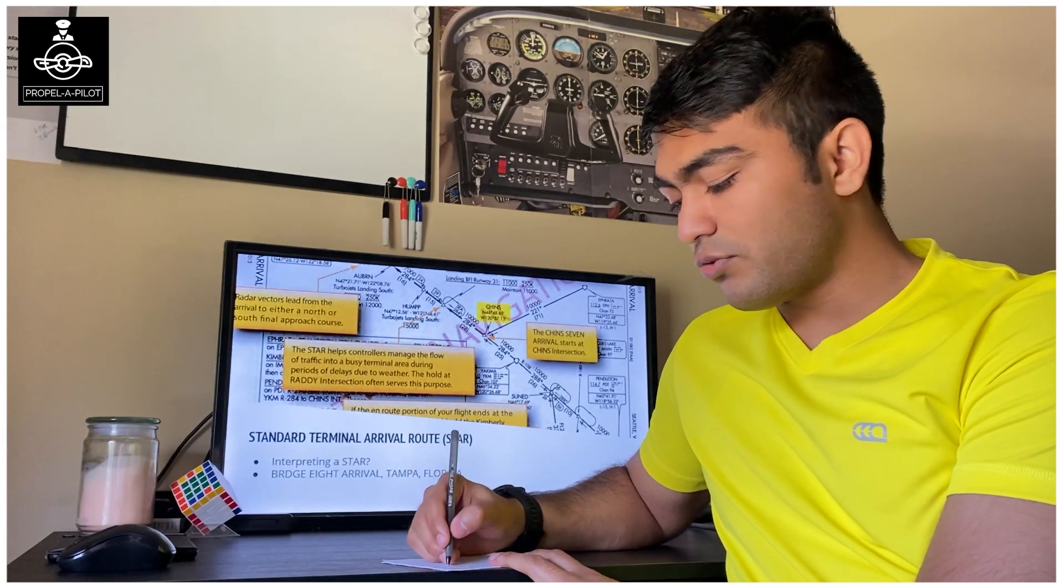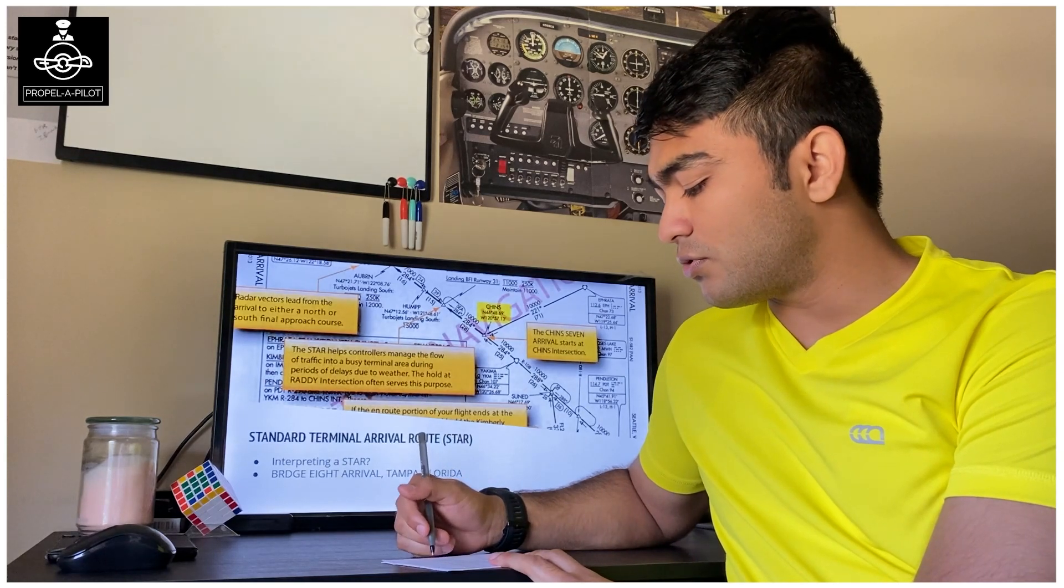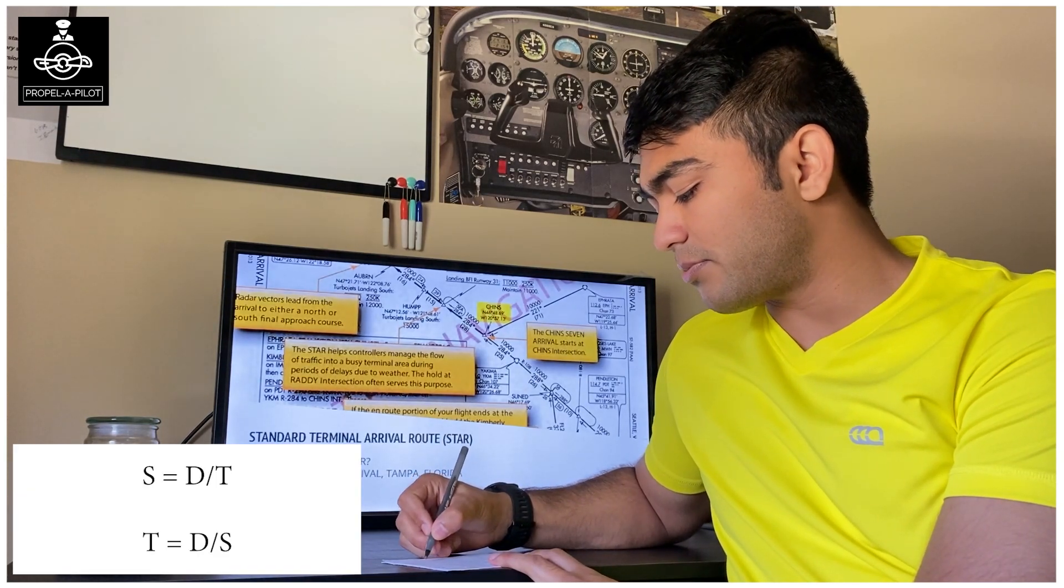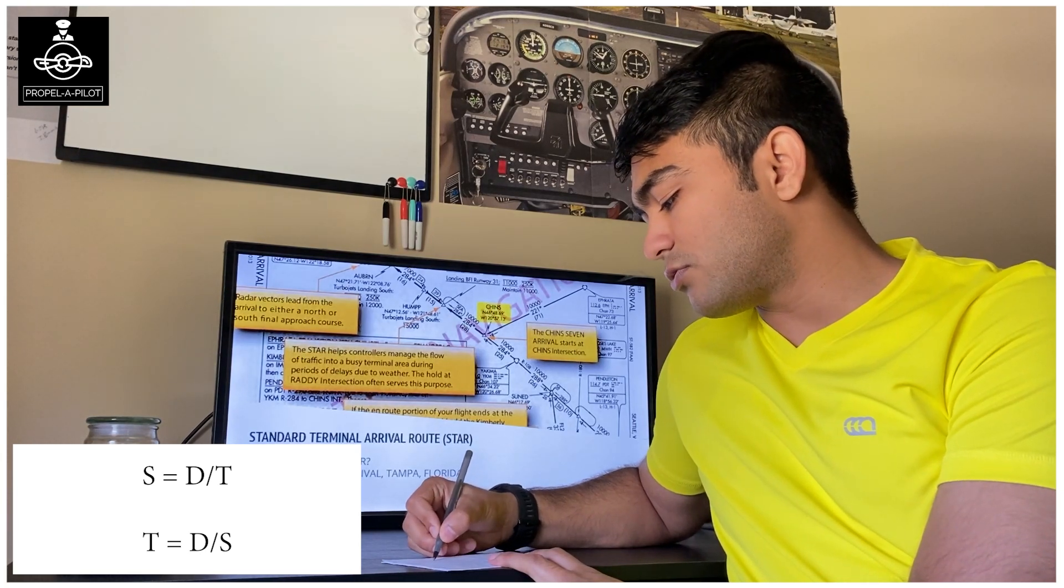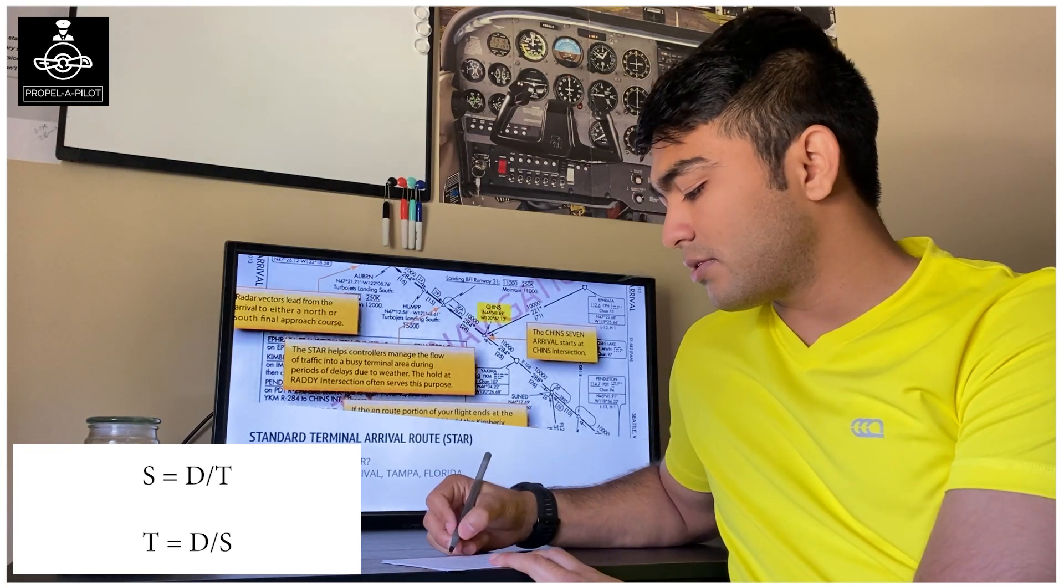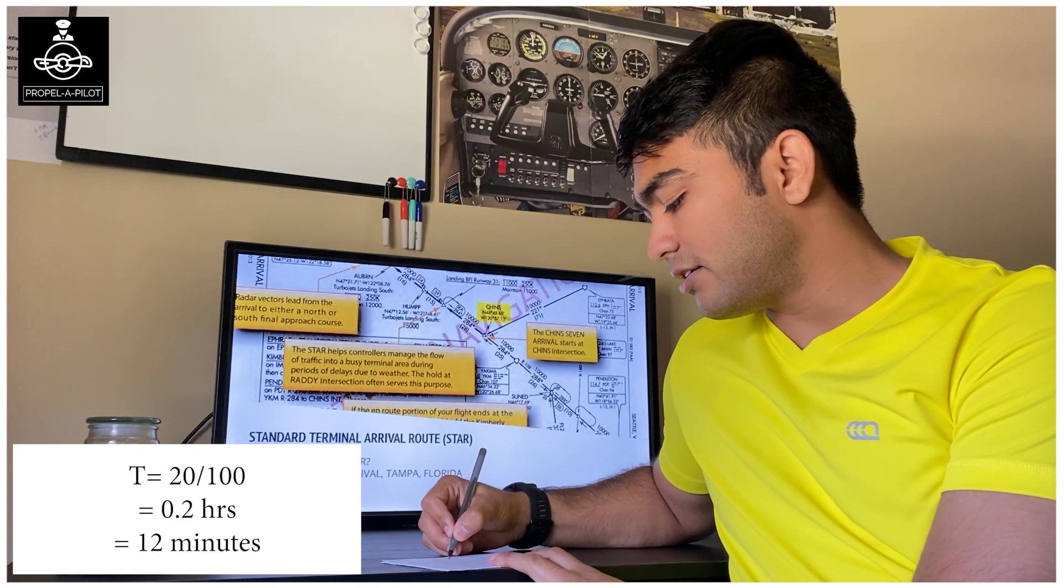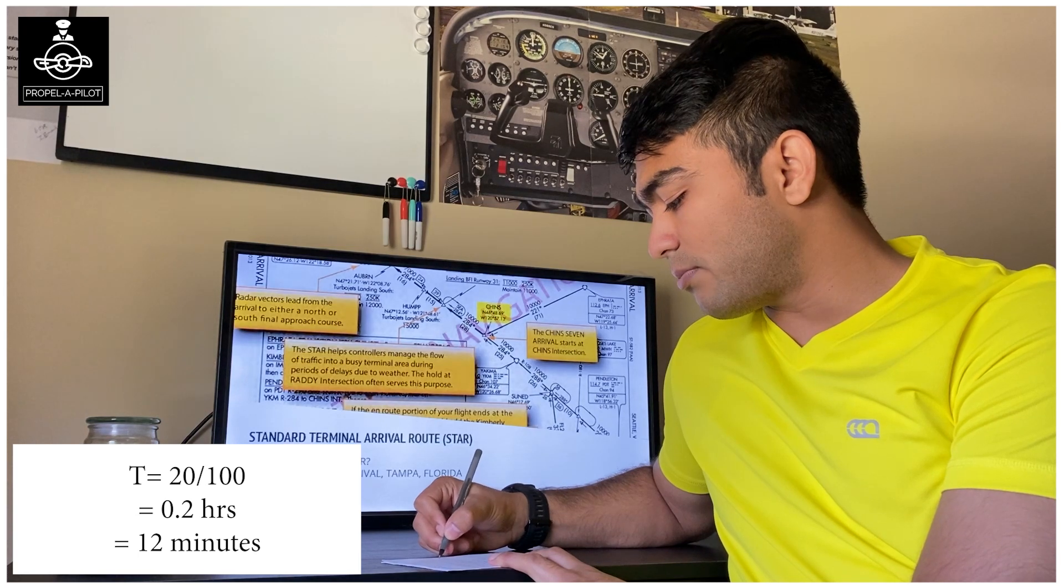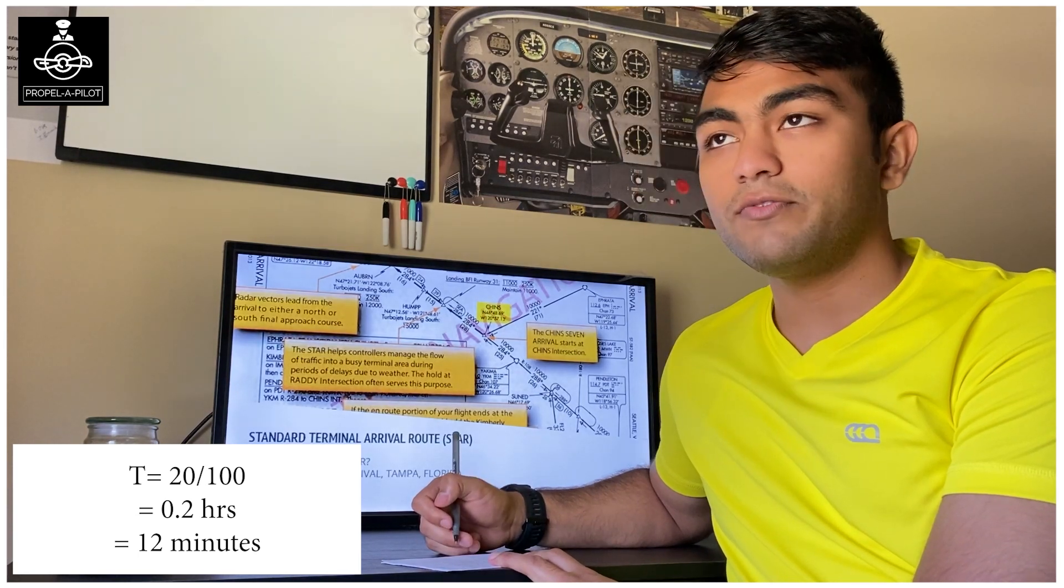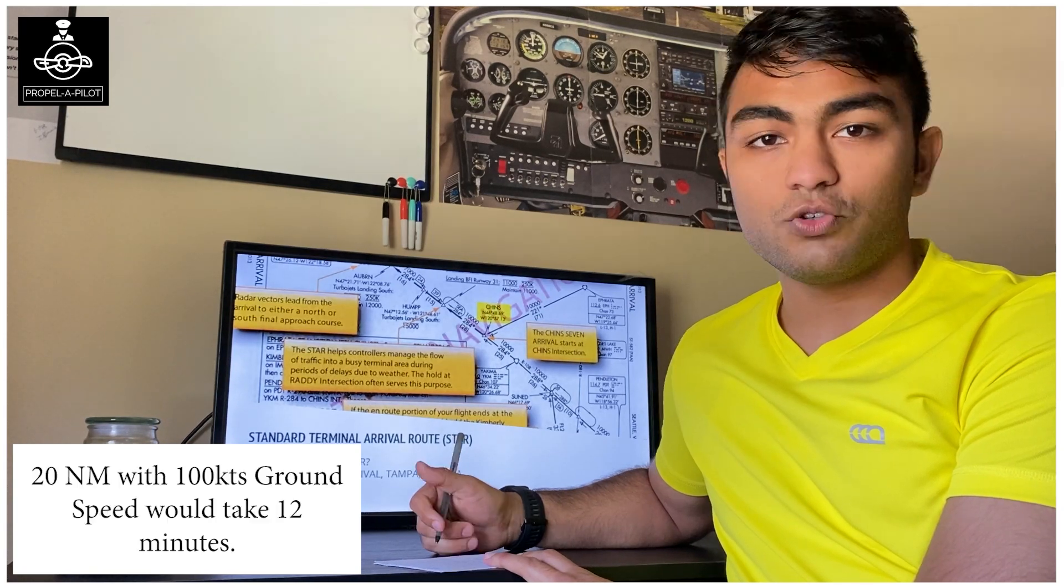So you are 20 miles away and you're flying at 100 knots. Use speed equals distance upon time. We get time equals distance divided by speed, which would be 20 divided by 100, which gives us one-fifth of an hour. One-fifth of an hour converts to 12 minutes, so you are 12 minutes away from your fix.